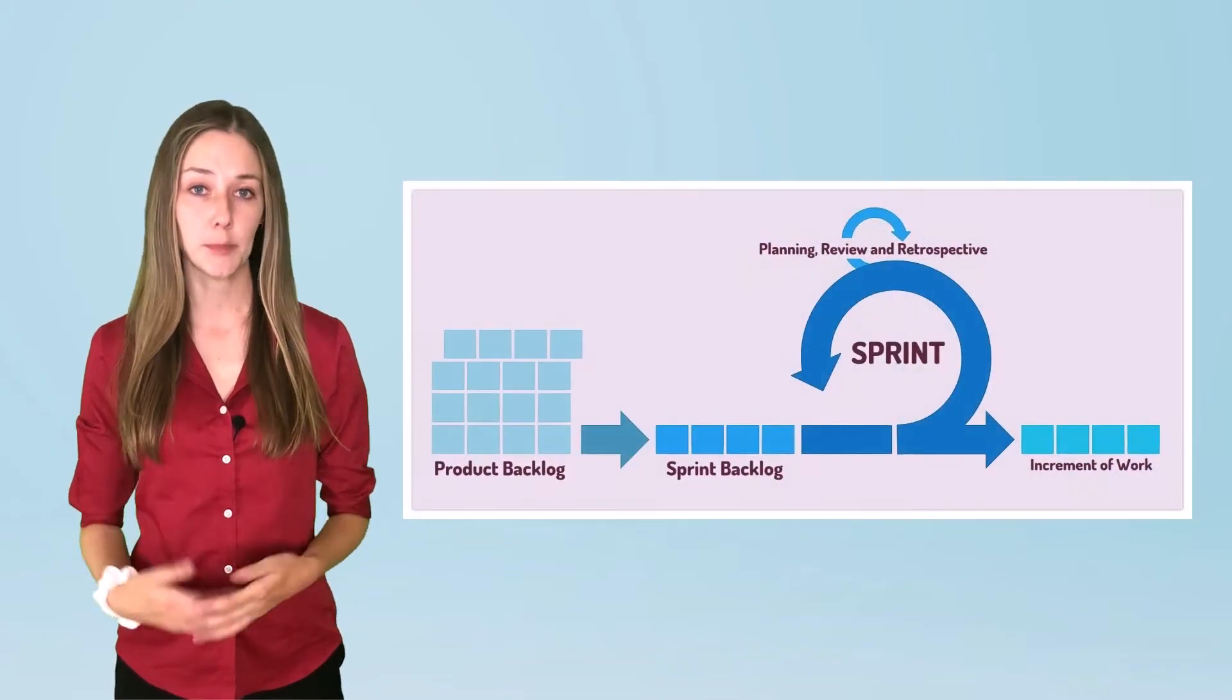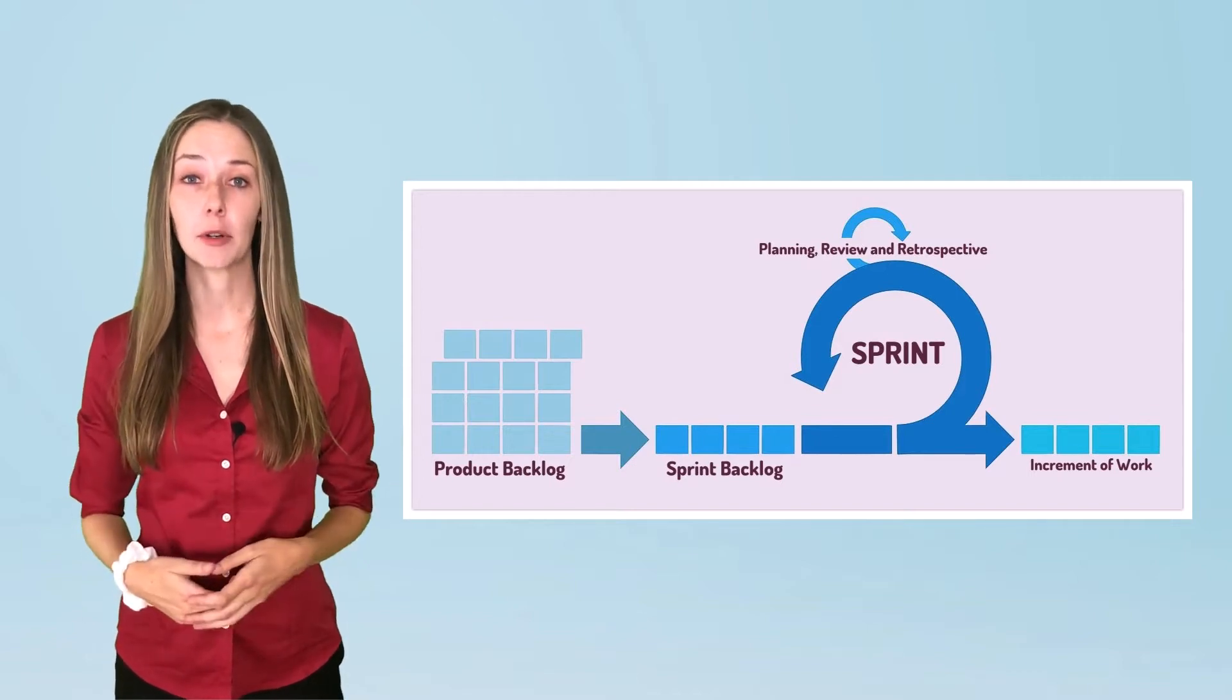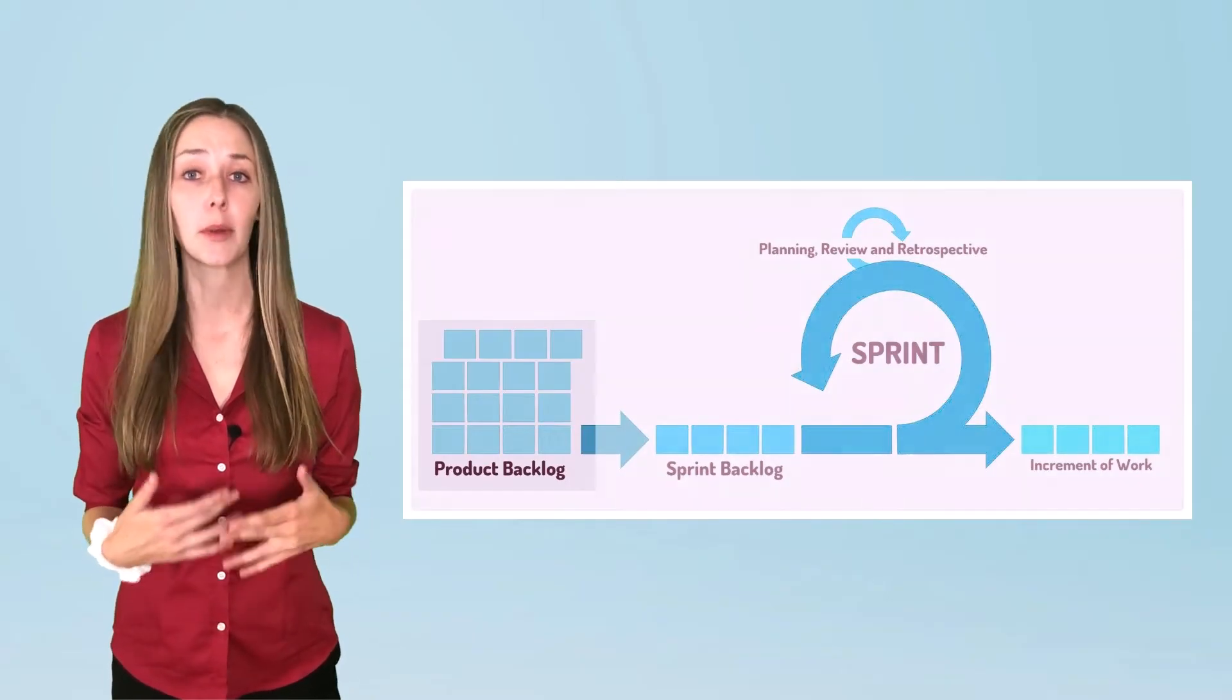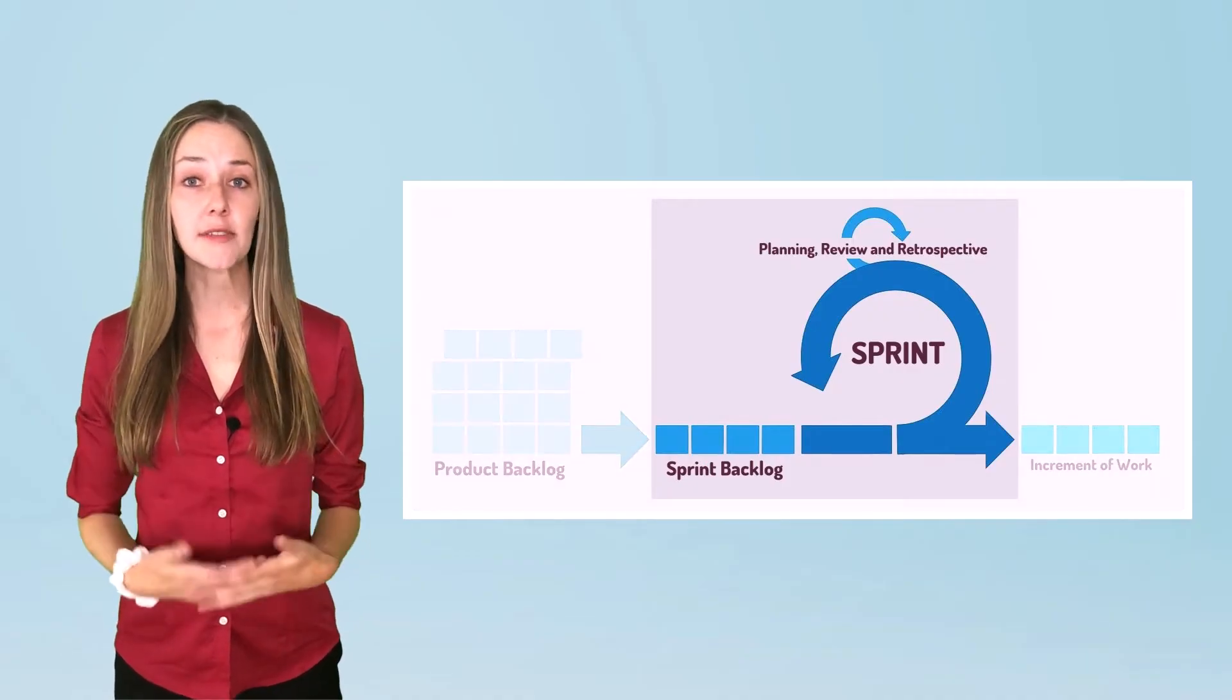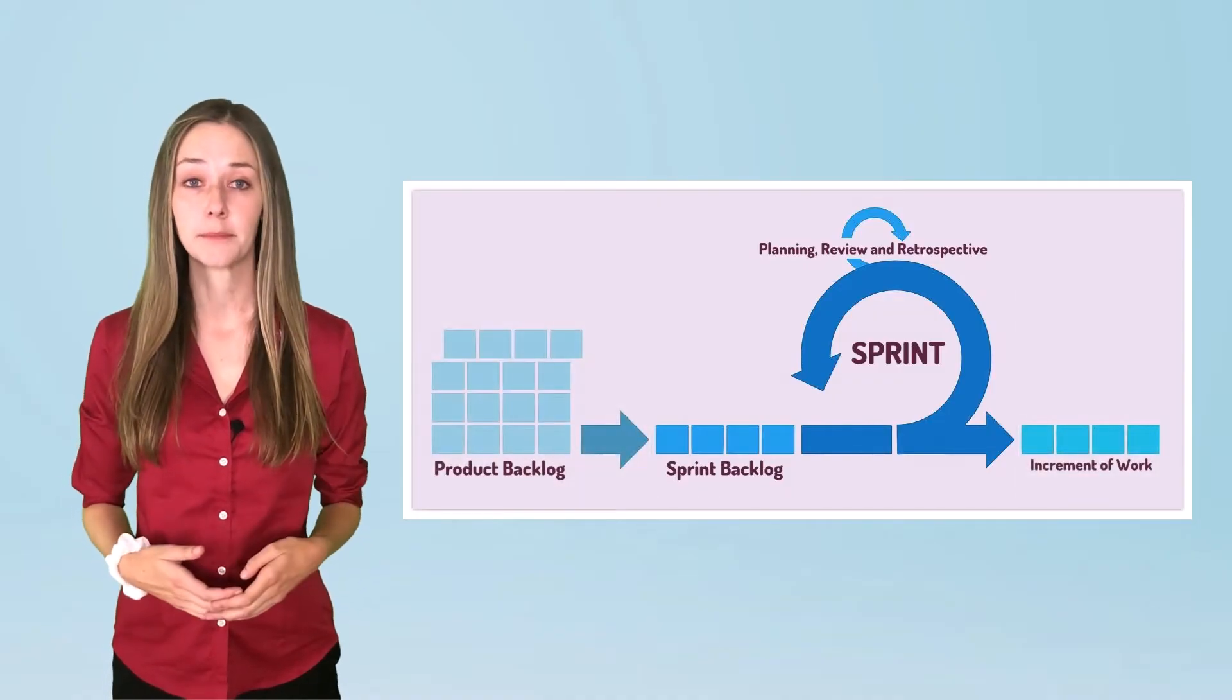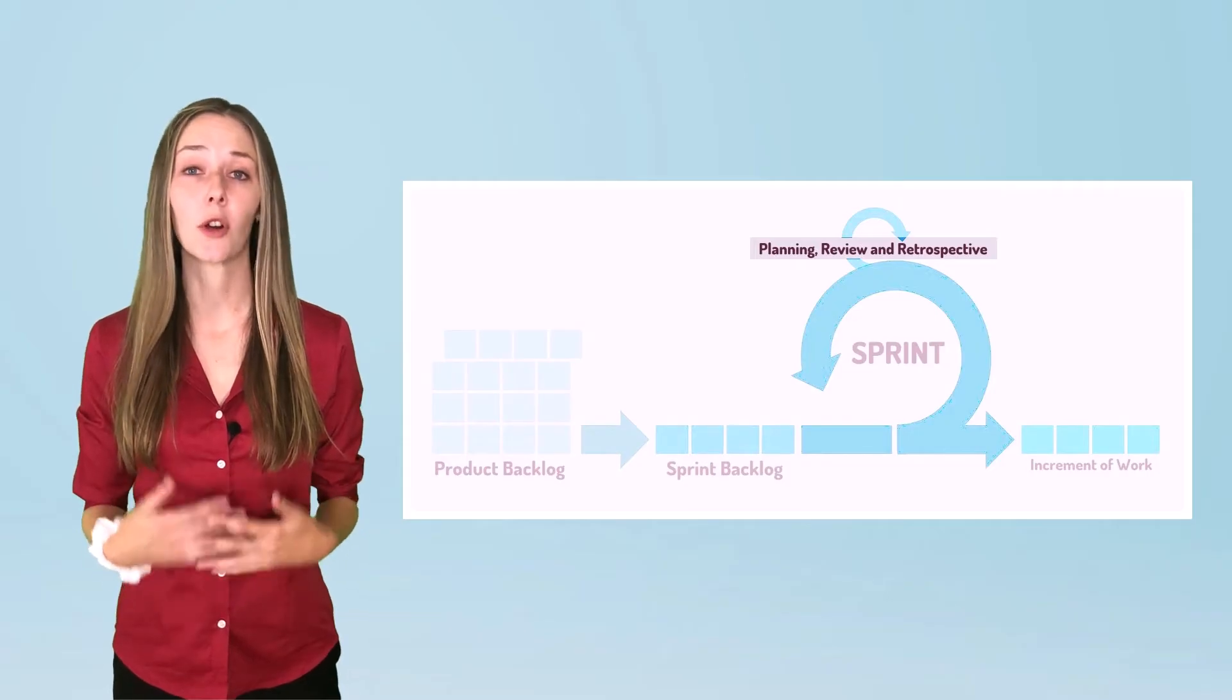In Scrum, you plan sprints. The Product Owner, Scrum Master, and agile developers look at the backlog of features to be developed and figure out how many features can be completed in a two or three-week sprint. Then the sprint begins. Features get developed, and once the two or three-week sprint is done, the progress is reviewed and a retrospective is performed. Planning, sprints, reviews, and retrospectives are all key elements of the Scrum framework.